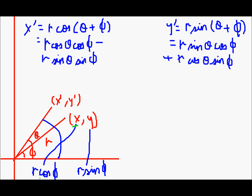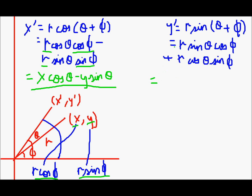Now, since x = r·cos(phi), we substitute x in place of r·cos(phi), giving x·cos(theta). And in place of r·sin(phi) we write y, so that term becomes −y·sin(theta). This is our new x'. For y': r·cos(phi) becomes x, giving x·sin(theta), and r·sin(phi) becomes y, giving +y·cos(theta). This is our new y'.